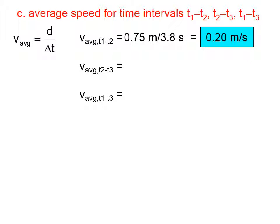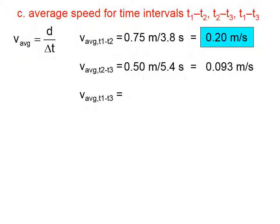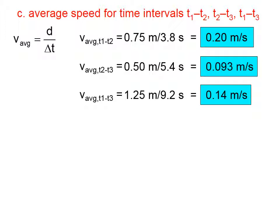Between time intervals 2 and 3, he travels a distance of 0.5 meters, and the time interval is 5.4 seconds. At the beginning of time interval 2, we have a time value of 3.8 seconds, and for time 3, we have 9.2 seconds. Subtracting those gives us 5.4 seconds, yielding 0.093 meters per second. Speed is distance over time, so between times 1 and 3, the cockroach travels 1.25 meters in 9.2 seconds — 0.14 meters per second.